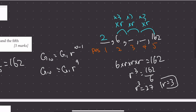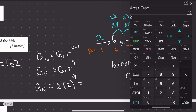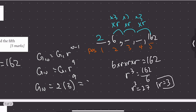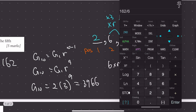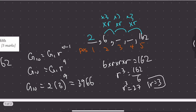Now we can compute g10. We substitute g1 equals 2 and r equals 3 into the formula: g10 equals 2 times 3 to the power of 9, which gives us 39,366. So the value stored in position 10 is 39,366.